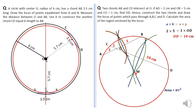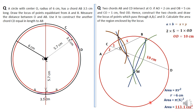For the last part, we calculate the area of the region enclosed by the locus. The area is simply π r squared. The radius is 6, so substituting gives an area of 113.1 cm squared.